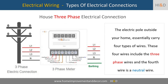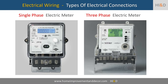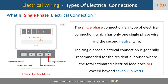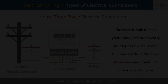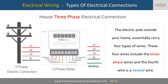For the residential electric supply connection, your home can be connected to any one of the phase lines or all three phase lines. This depends upon the type of connection that you will be provided. The single phase electrical connection type will have only one phase wire, whereas the three phase electrical connection type will have three separate phase wires.